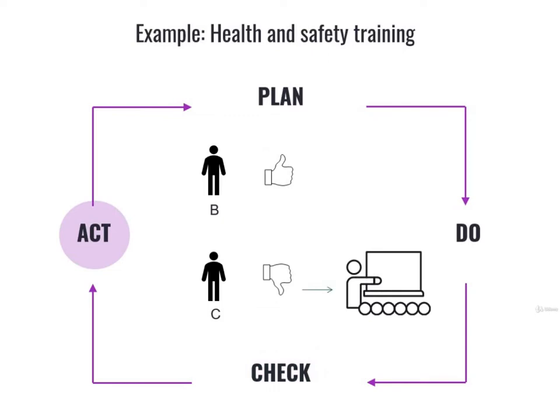Fourth step: Act. In our example, let's say that Worker B passes the test, while Worker C doesn't. As for Worker B — congratulations, he's ready to work. So the act step really just consists in putting him at work. As for Worker C, what should we do to fix this problem? The act step for this case could be retraining him.